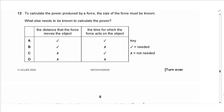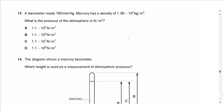Question 12 says: to calculate the power produced by a force, the size of the force must be known. What else is needed? The distance is needed to calculate work (force times distance), and the time is needed to divide energy by time to calculate power. So the answer is A.